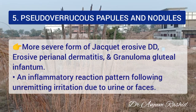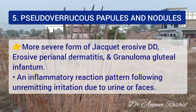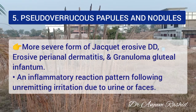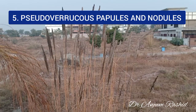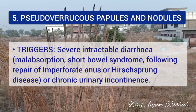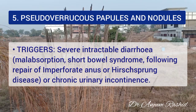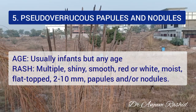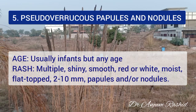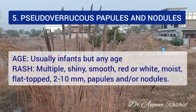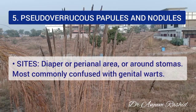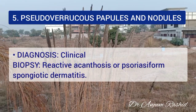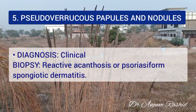The fifth differential is pseudo-verrucous papules and nodules. It is the most severe form of Jacquet erosive diaper dermatitis, erosive perianal dermatitis, or granuloma gluteal infantum — an inflammatory reaction following unremitting irritation due to urine or faeces. Triggers include severe intractable diarrhea such as malabsorption, short bowel syndrome, or following repair of imperforate anus or Hirschsprung disease, and also chronic urinary incontinence. Usually infants are affected but it can occur at any age. The rash consists of multiple shiny smooth red or white moist flat-topped 2–10 mm papules or nodules in the diaper or perianal area and around stomas. It is most commonly confused with genital warts. Biopsy shows reactive acanthosis and psoriasiform spongiotic dermatitis.